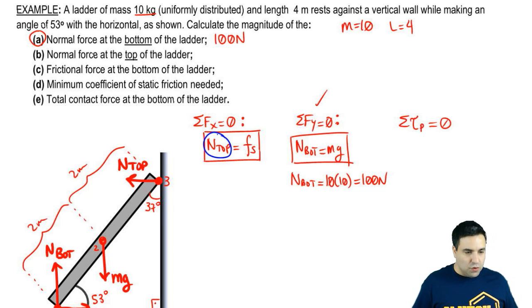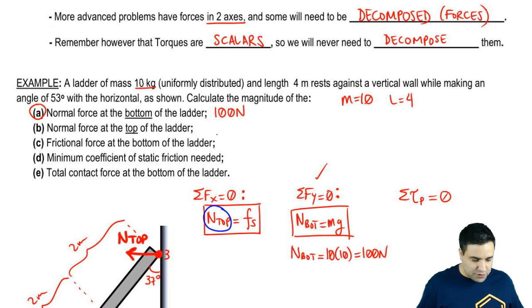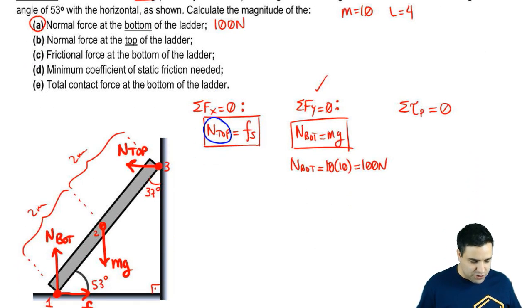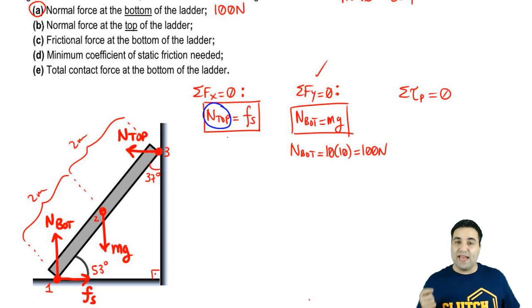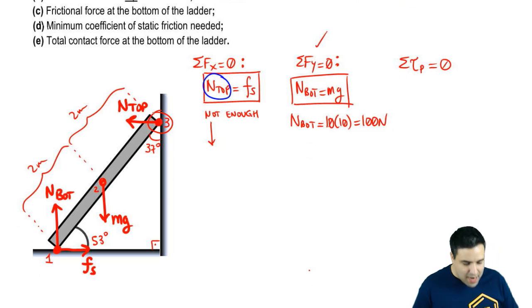Now what about the normal force at the top of the ladder? So this whole thing here is done. The normal force at the top of the ladder, to solve for that I would need to know static friction. I don't have enough information just yet to find static friction. So I don't have mu. I do have normal at the bottom. I don't have mu. And I wouldn't be able to use that anyway.